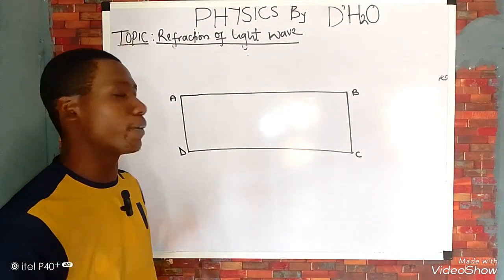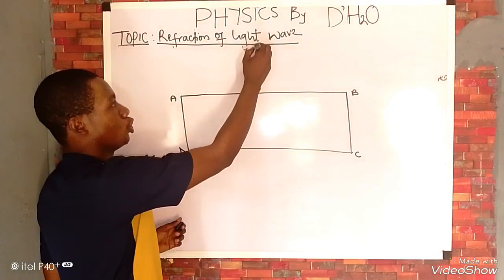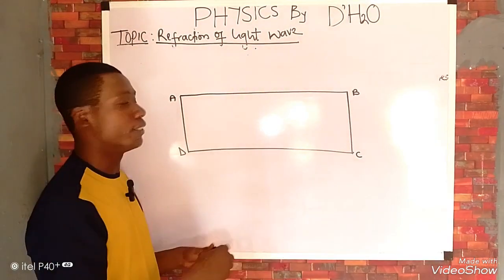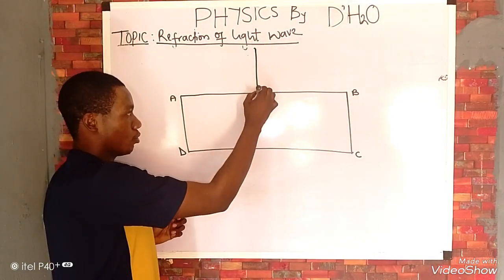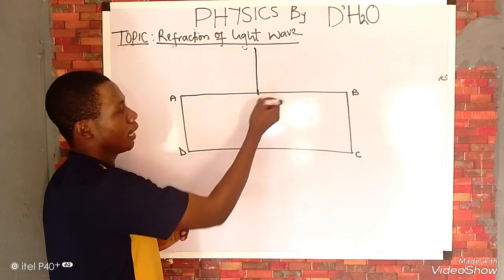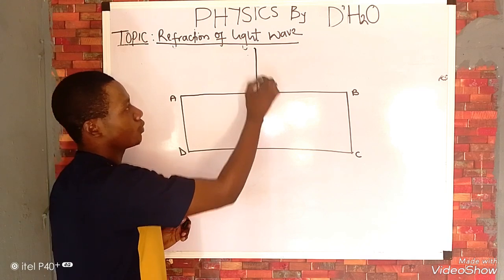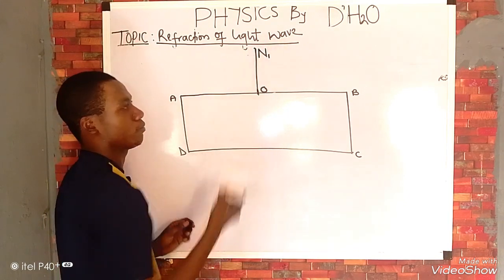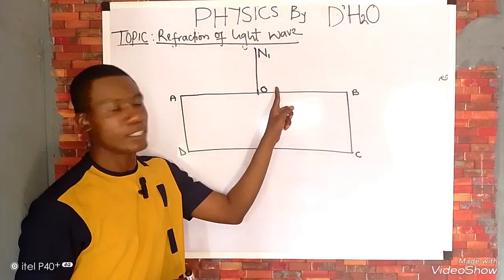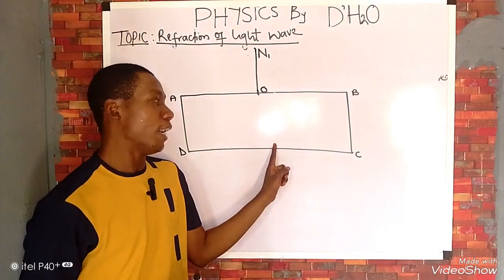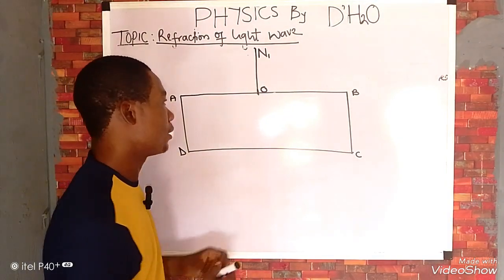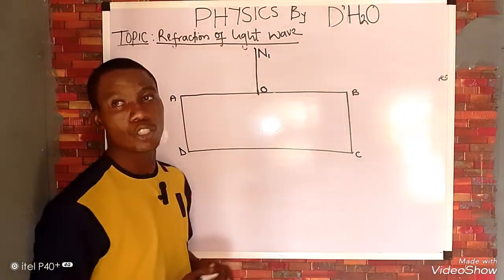In the construction of your ray diagram, you must first draw your normal. The normal is a line drawn perpendicular to the surface. The point where the normal meets the glass is labeled N1 at the first interface, and the normal at the other interface is labeled N2. The normal is an imaginary line drawn perpendicularly to a plain surface.